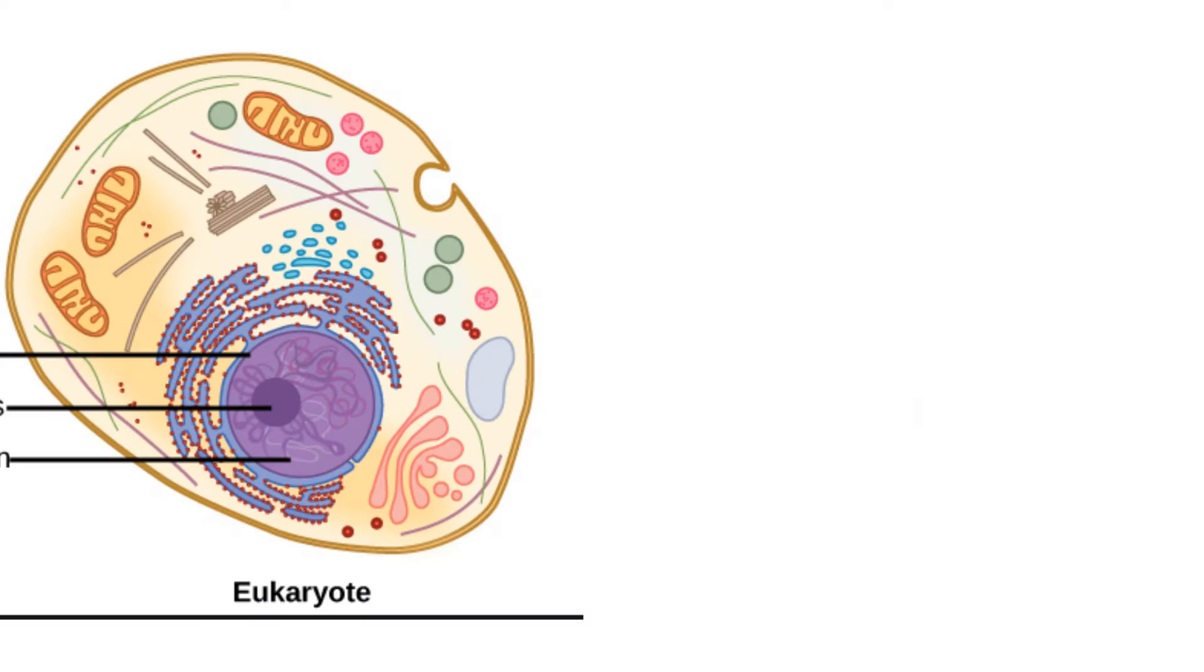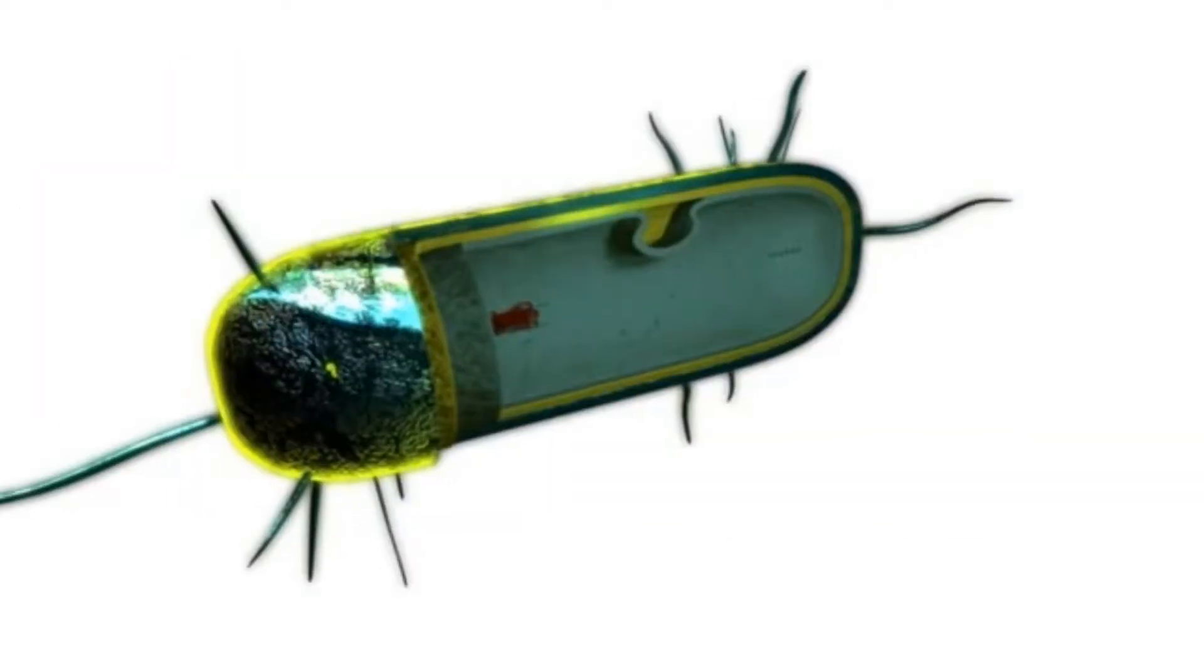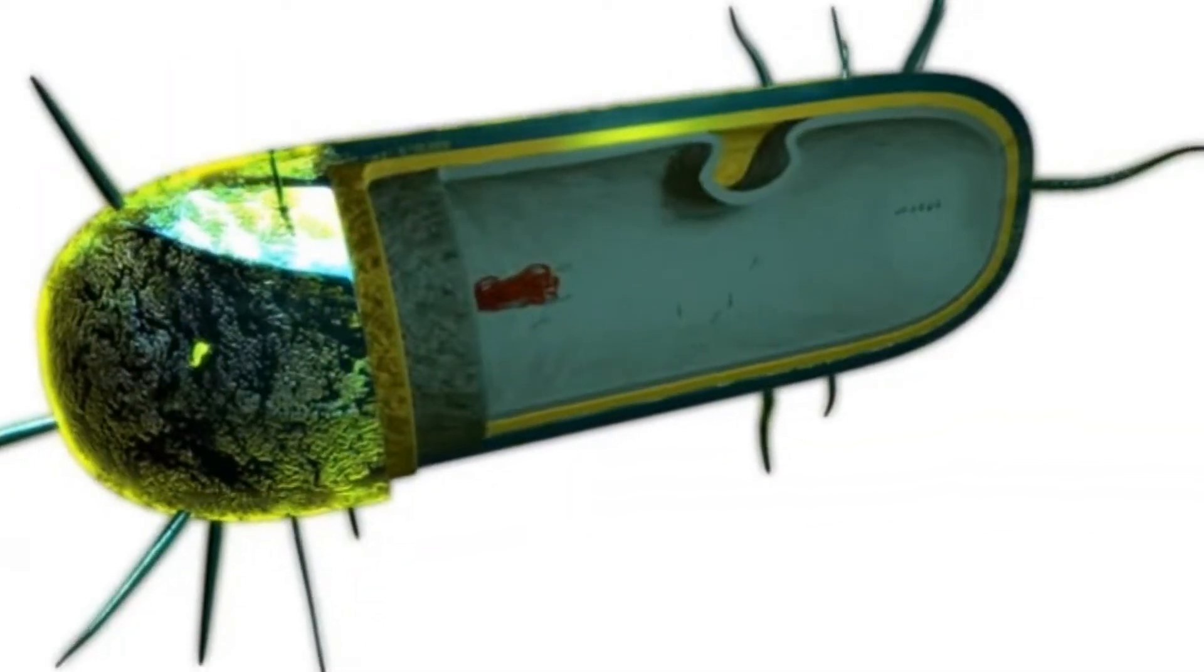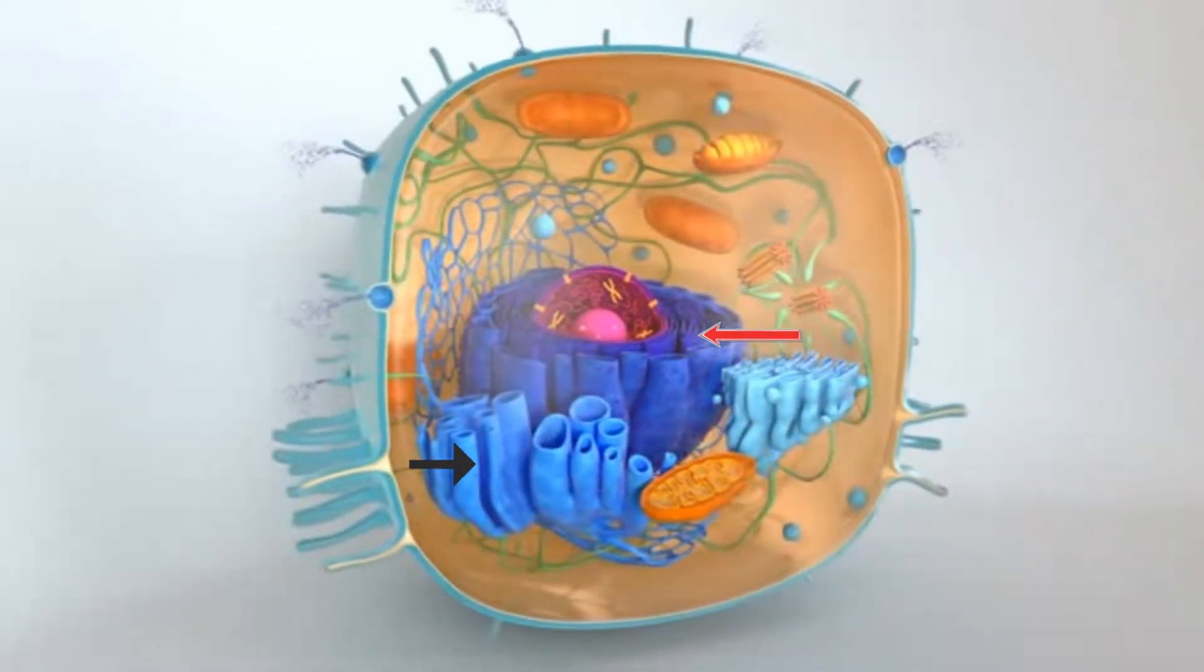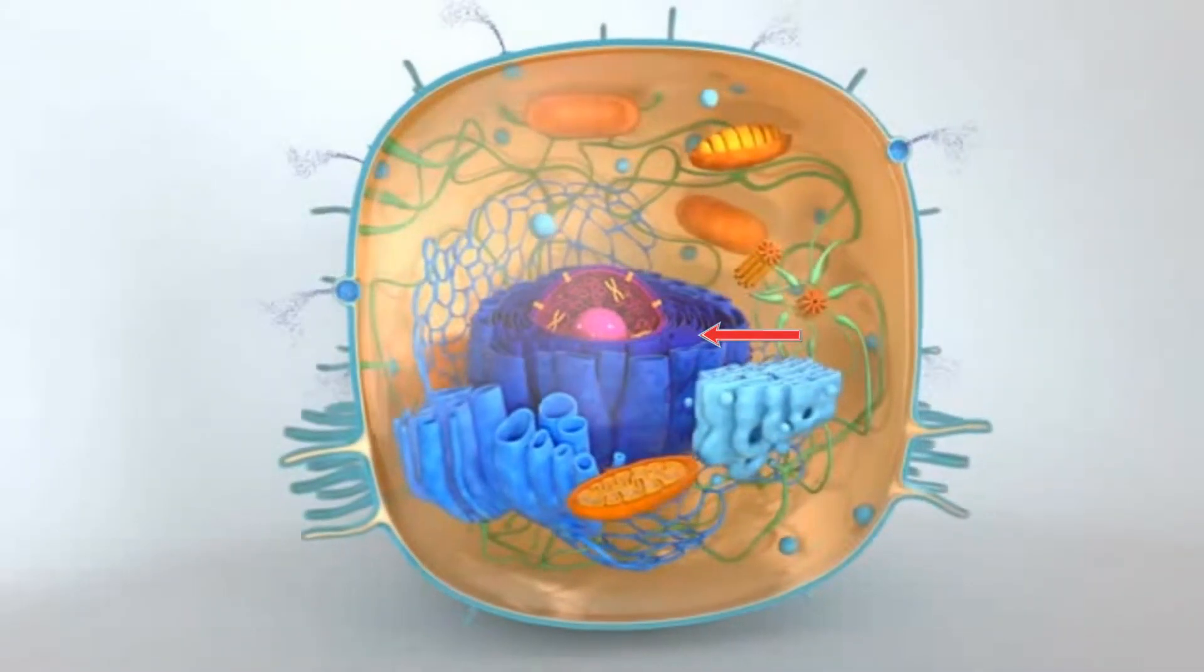The ER is found in both plant and animal cells, but not in bacterial cells. If you take a look at the ER, you will notice that it consists of folded membranes and looks like a transportation system.